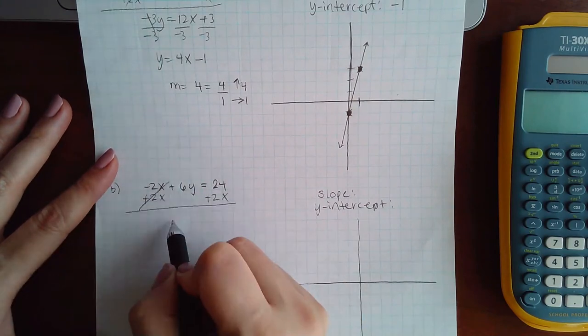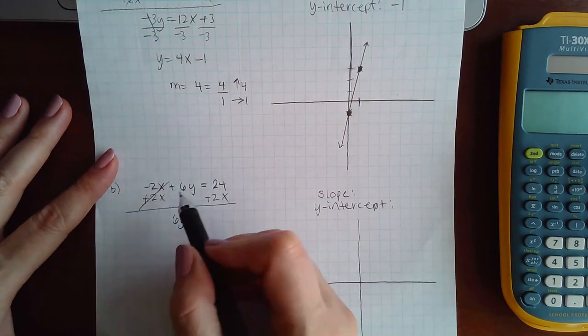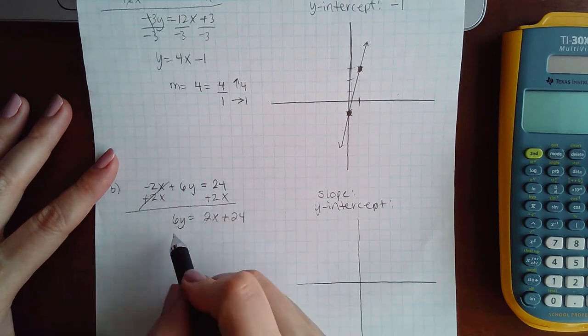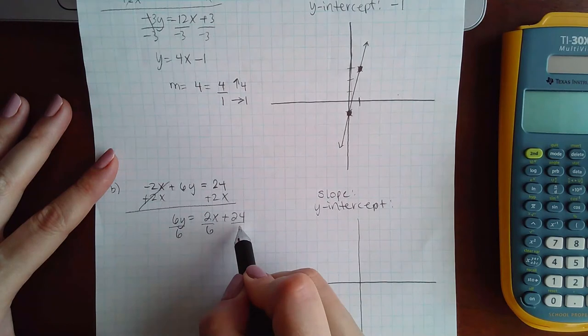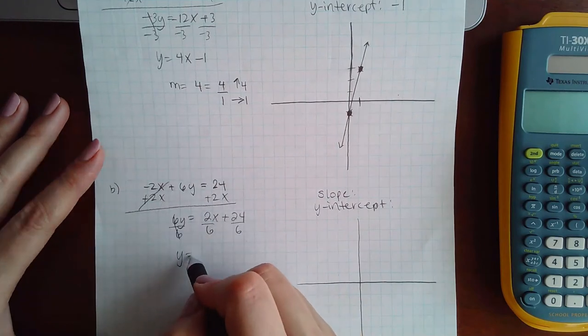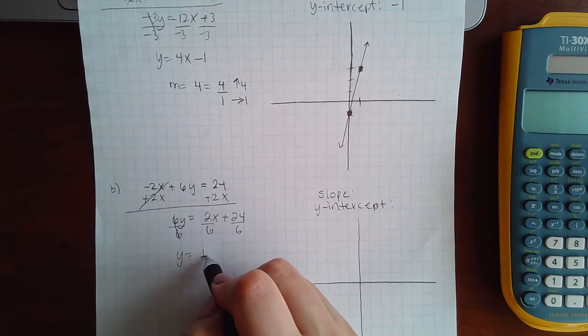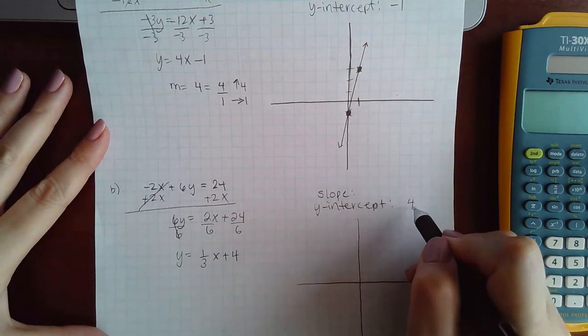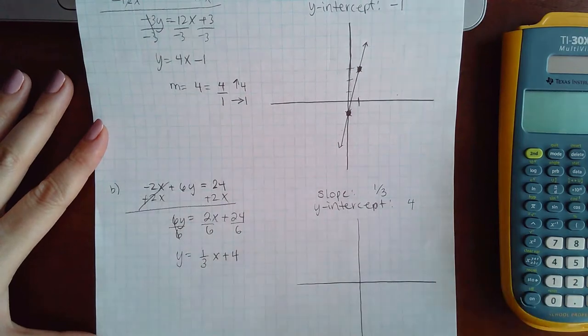We're going to go ahead and solve this one. So we get +6y equal to +2x and +24, divide by 6. I get y equals 1/3 x when you reduce, and 4. So the y-intercept is 4 and the slope is 1/3.